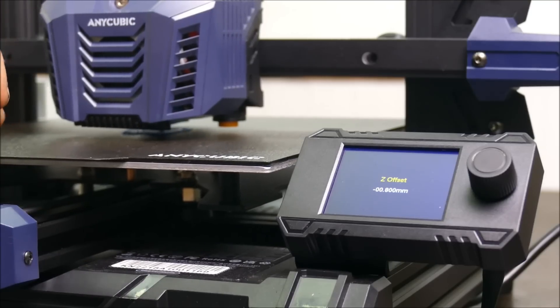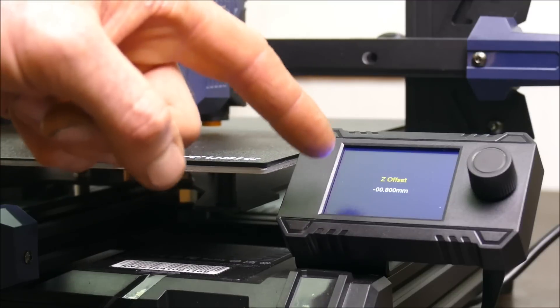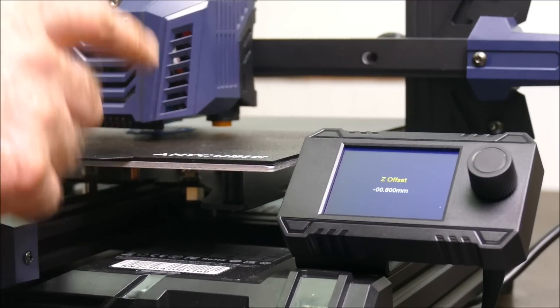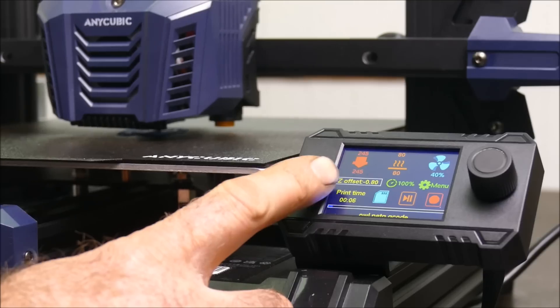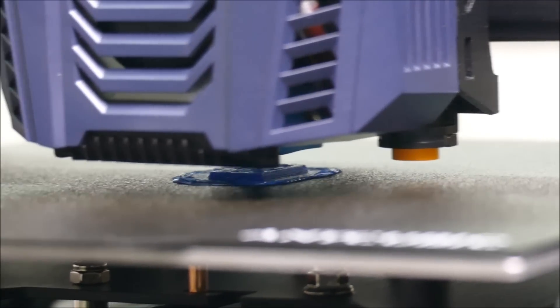So I've immediately started printing, and I noticed that it wasn't getting onto the bed properly. Whilst it was printing, I was able to change the Z offset, which means you can adjust the Z height mid-print. I've got mine at 0.8 millimeters. You'll also notice how incredibly quiet it is whilst printing.